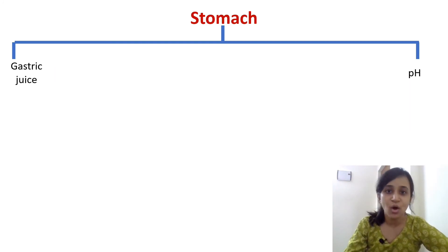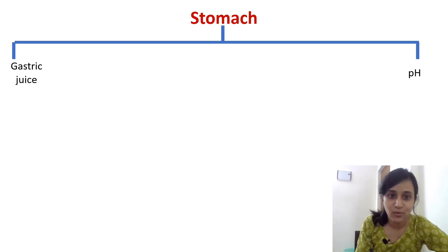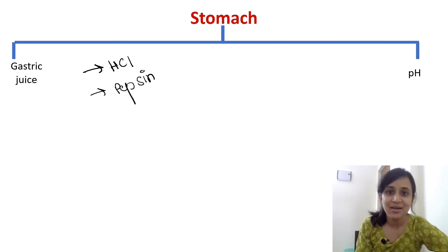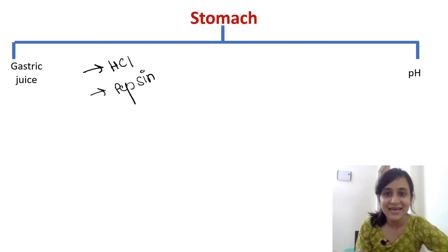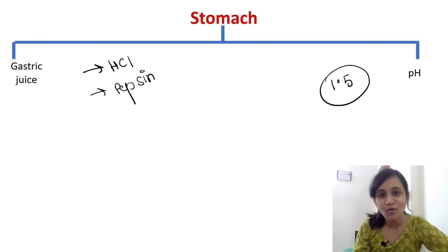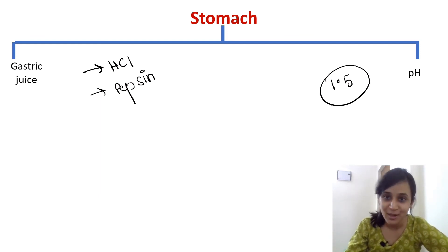The gastric juice of our stomach contains HCl (hydrochloric acid) and pepsin, which can kill bacteria within 15 minutes. The stomach has a very low pH of 1.5, and this high acidity is capable of destroying most pathogens.